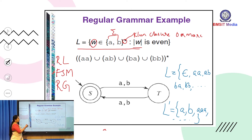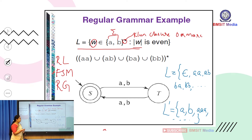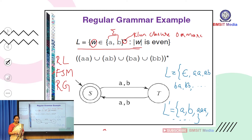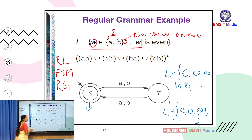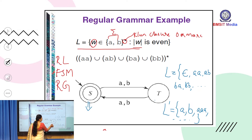To handle acceptance and rejection of strings, the finite state machine uses states. A state with two concentric circles is a final state; a state with one circle is an intermediate state. When the input string is fully processed and the machine halts in a final state, the string is accepted. If it halts in a non-final state, the string does not belong to the language.